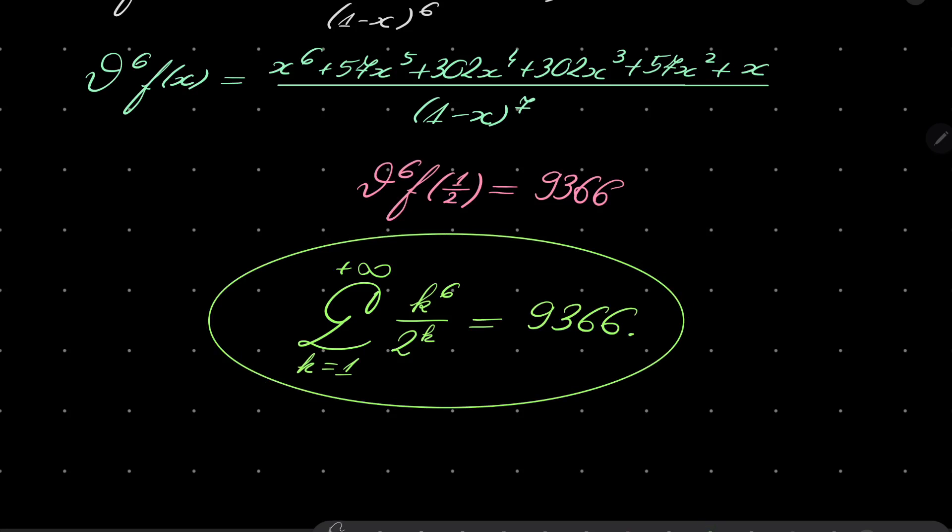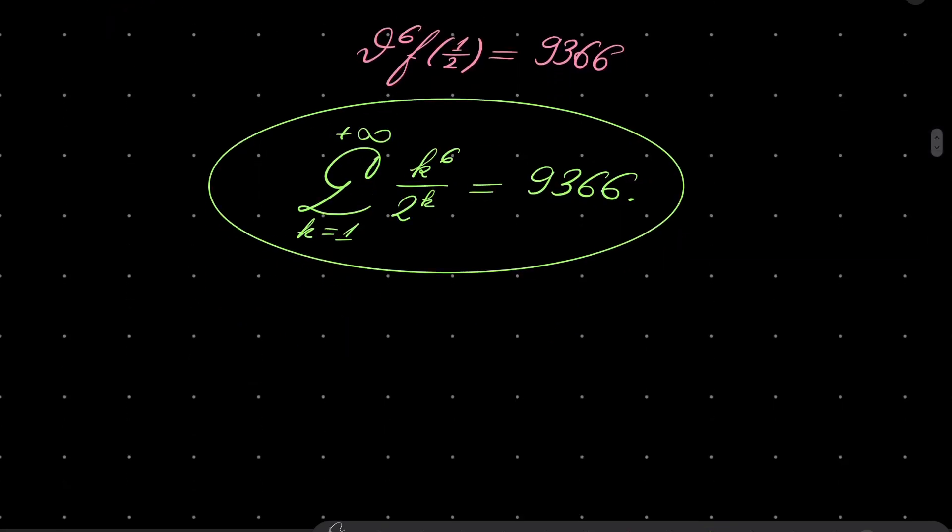Again, there are other ways to do it. I will not get into details but you can read about so-called Stirling numbers of the second kind. And basically Stirling numbers allow us to write k to the sixth power in terms of falling powers. For example, it can be verified that k to the sixth power can be written as a combination of falling powers.